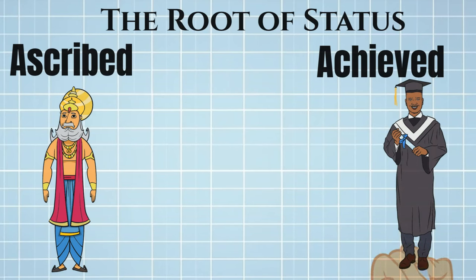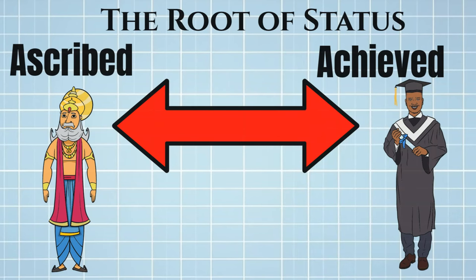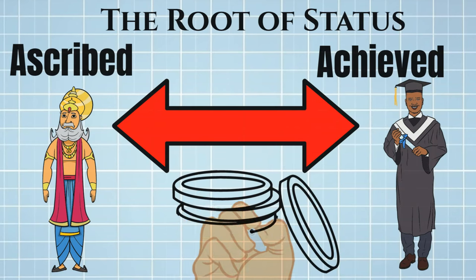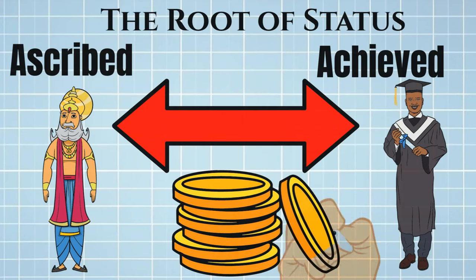Most status systems are actually a mix of both ascribed and achieved. Consider the class system of the USA during the Gilded Age, where your birth mattered but money counted for more, resulting in the concept of new money versus old money. In such a mixed system, the tension between achieved status and ascribed status can become a great driving force in your world's narrative.